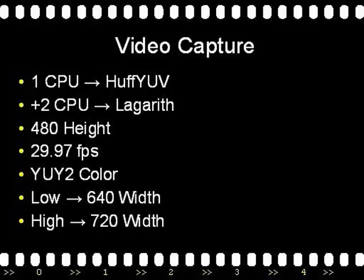Now for the actual numbers. Video — I kind of explained this already in the software. PAL users just need to double-check their height and frames per second. If your software doesn't handle the weird 29.97, just use 30. We use YUY2 because that is a faster encoding than RGB. The difference between a low and high record is basically whether you want the normal 4:3 ratio or the widescreen 16:9.